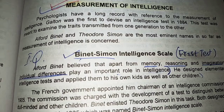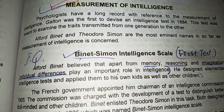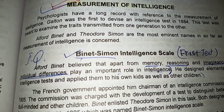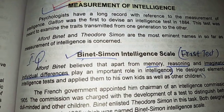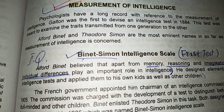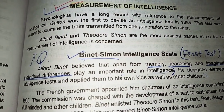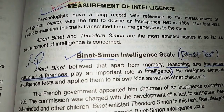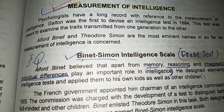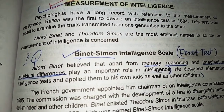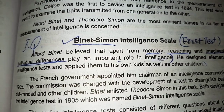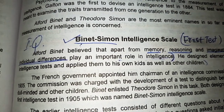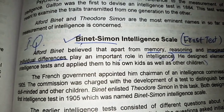So in 1884, Galton had the first battery — meaning a series of tests. This first battery measured reaction time, visual acuity, and auditory threshold, which was also measured by memory.